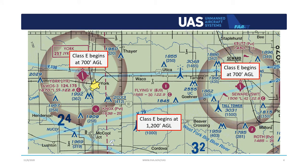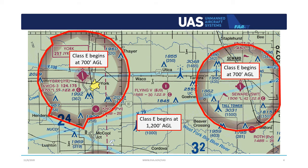It's important to remember that Class E airspace begins at 1200 feet AGL unless otherwise shown. When Class E begins at 700 feet above ground level, it is indicated by a magenta shading ring usually surrounding the airport. Now you might be wondering why you need to know about Class E airspace that starts at 700 to 1200 feet when most drone flights are limited to 400 feet.